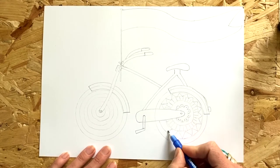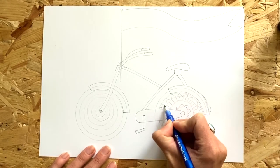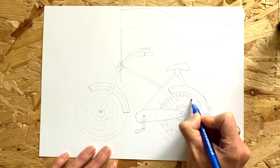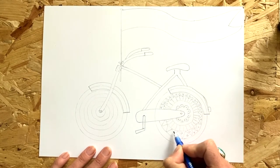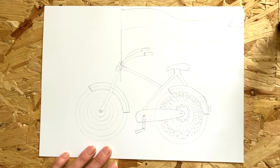Notice again how I've jumped my pencil over the bicycle frame because this bit of the wheel would be hidden by the frame.